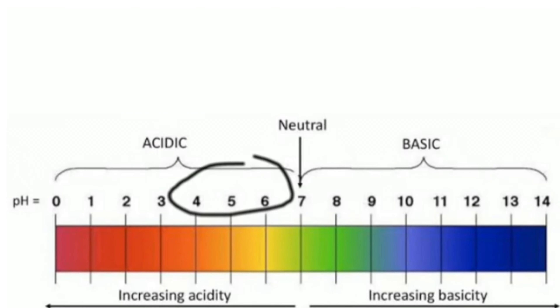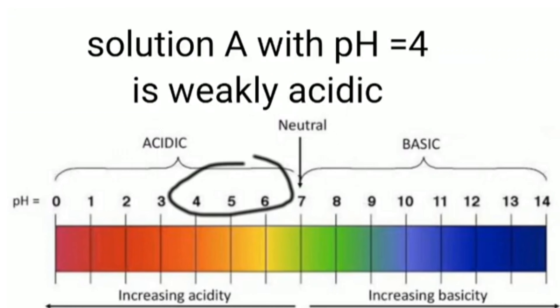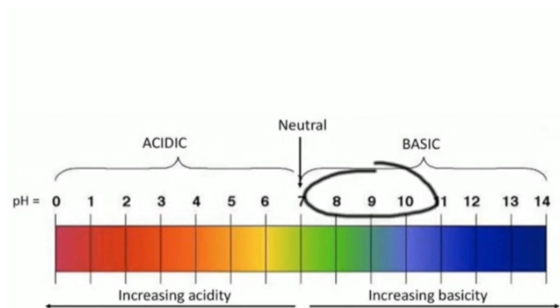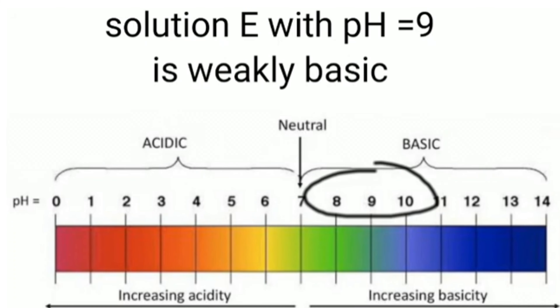The solution with pH less than 7 but closer to 7 is weakly acidic, hence solution A is weakly acidic. The solution with pH greater than 7 but close to 7 is weakly alkaline, hence solution E with pH 9 is weakly alkaline.